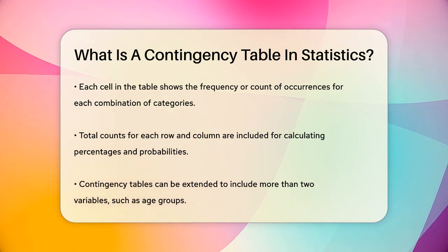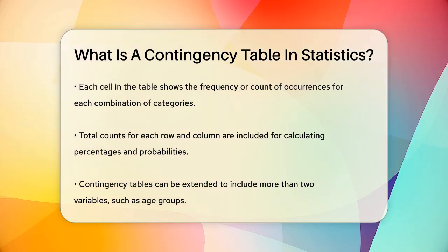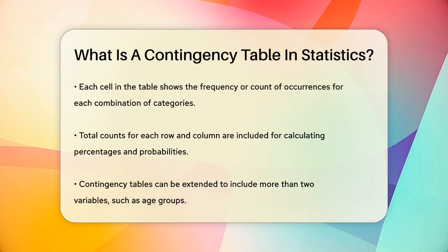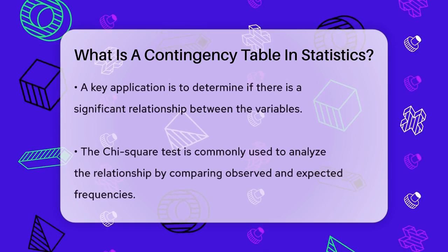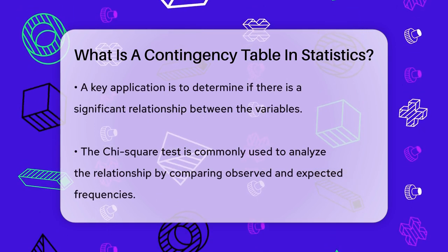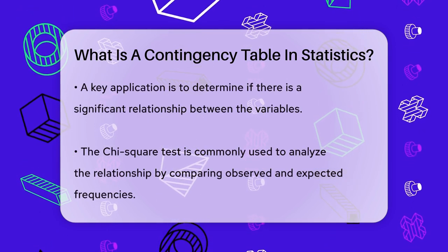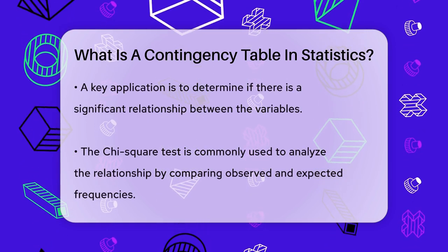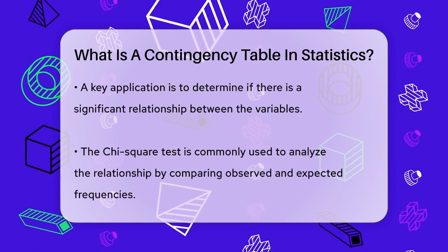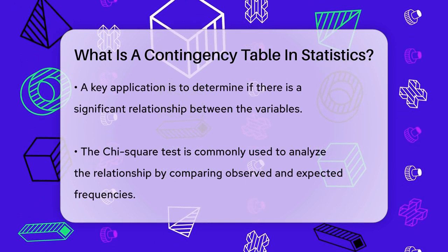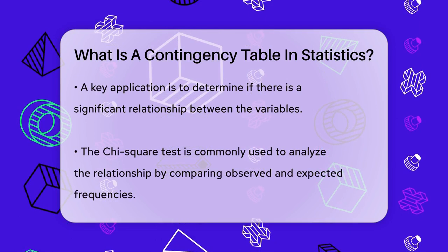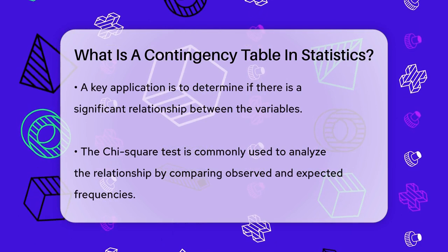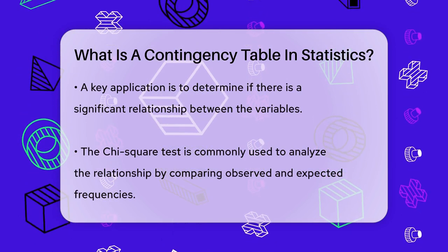One of the key uses of contingency tables is to determine if there is a significant relationship between the variables. This is often done using a chi-square test. The chi-square test compares the observed frequencies in the contingency table with the expected frequencies if there were no relationship between the variables.